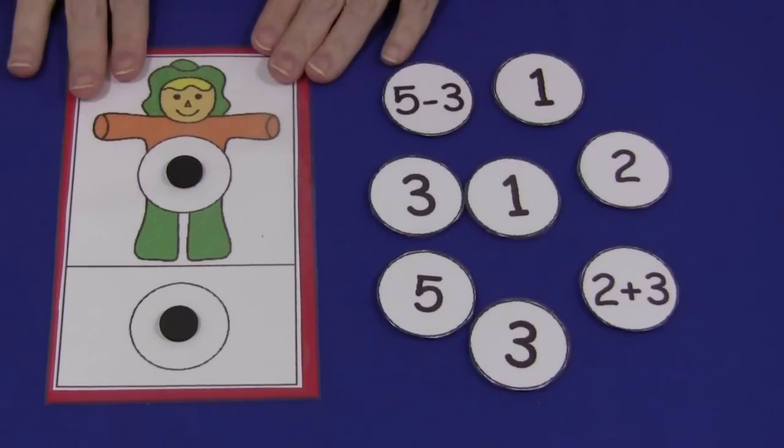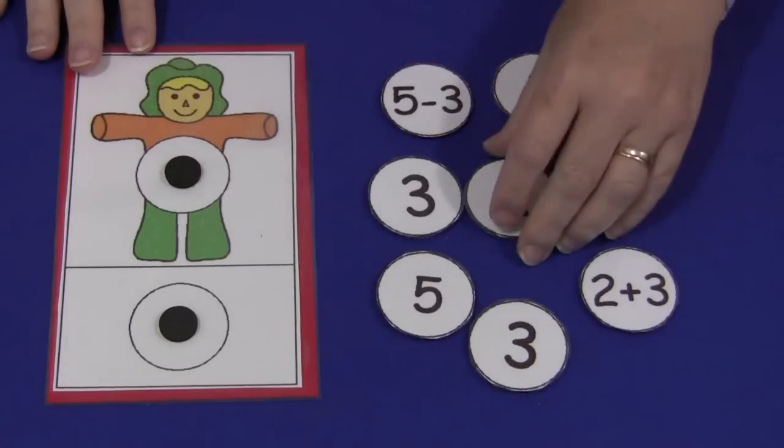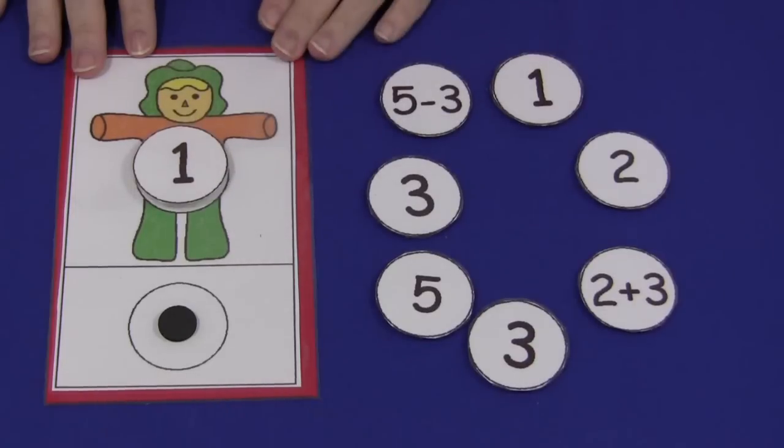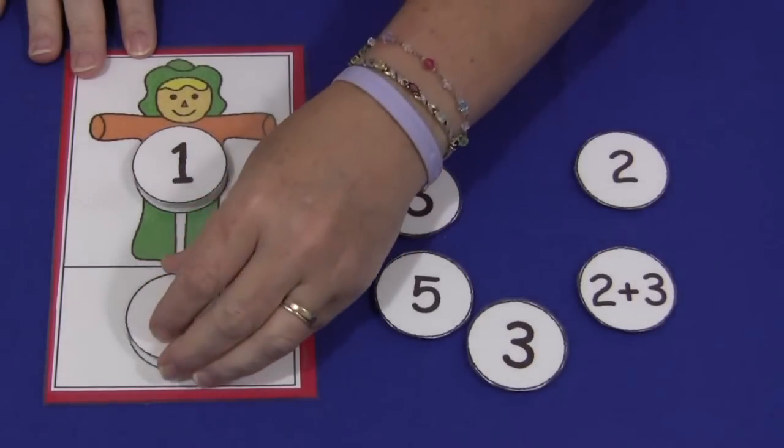You would have your mat sitting out and then you would have some numbers sitting out. The children would take a number and place it on the top, and then they would need to find the matching number and place it on the bottom like so.